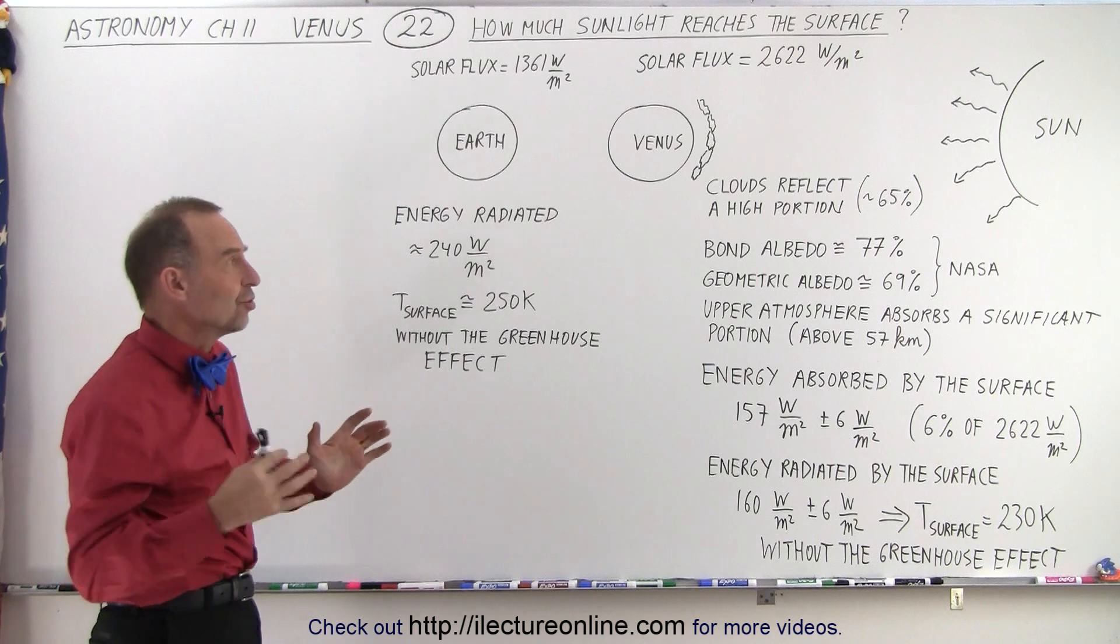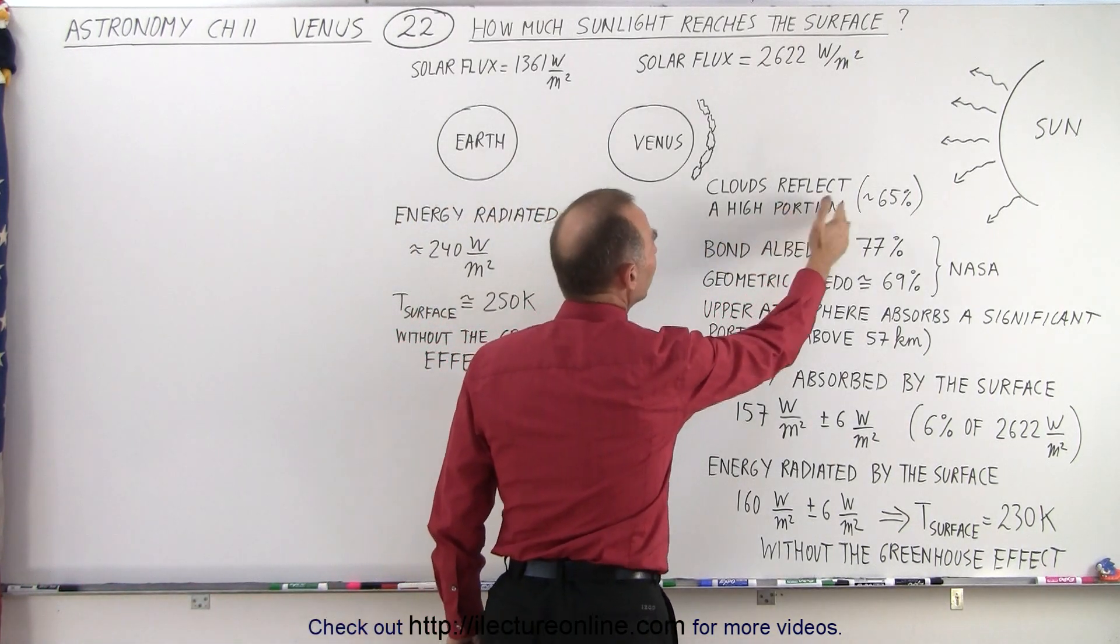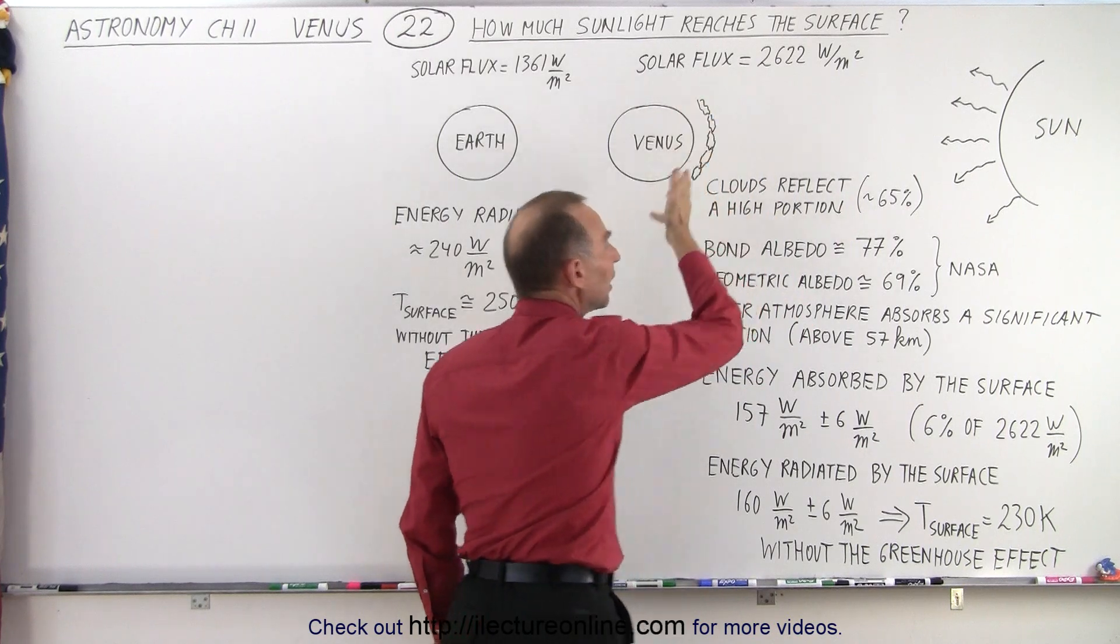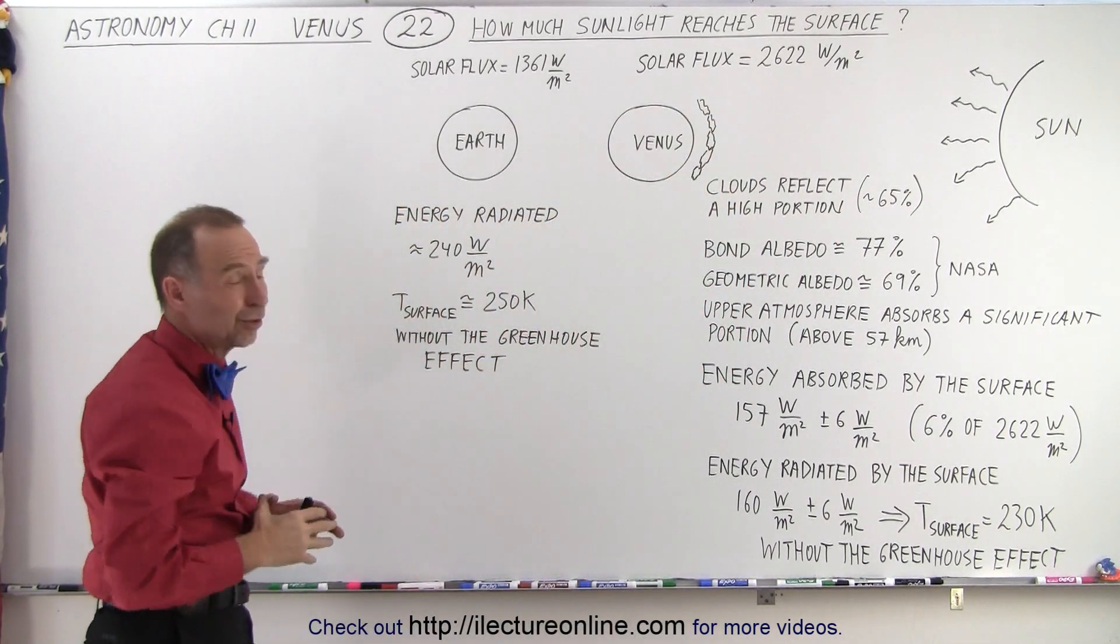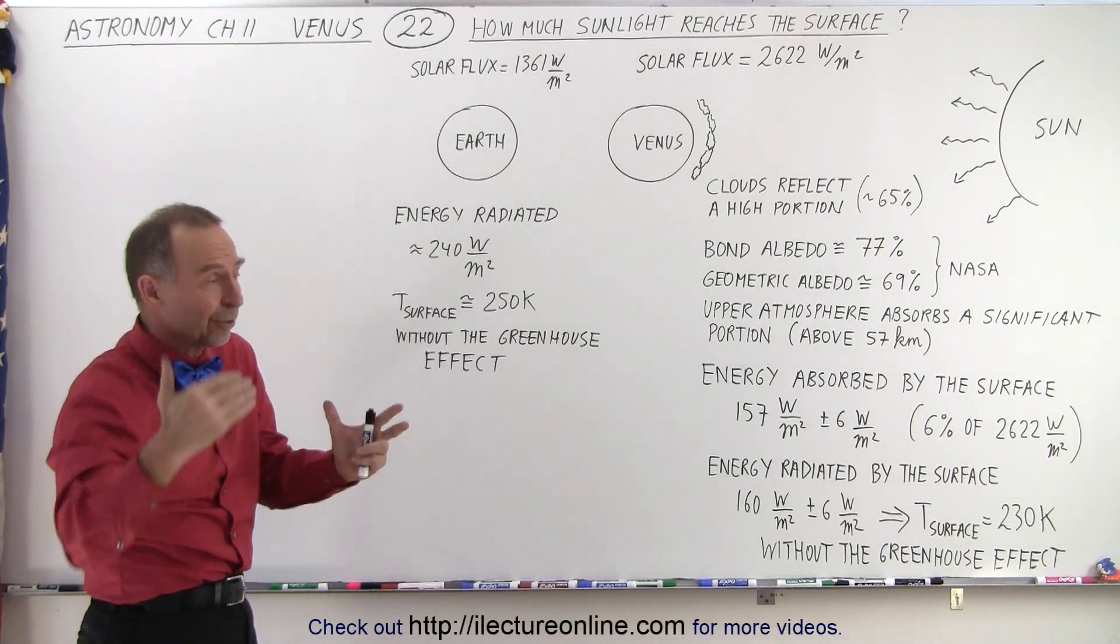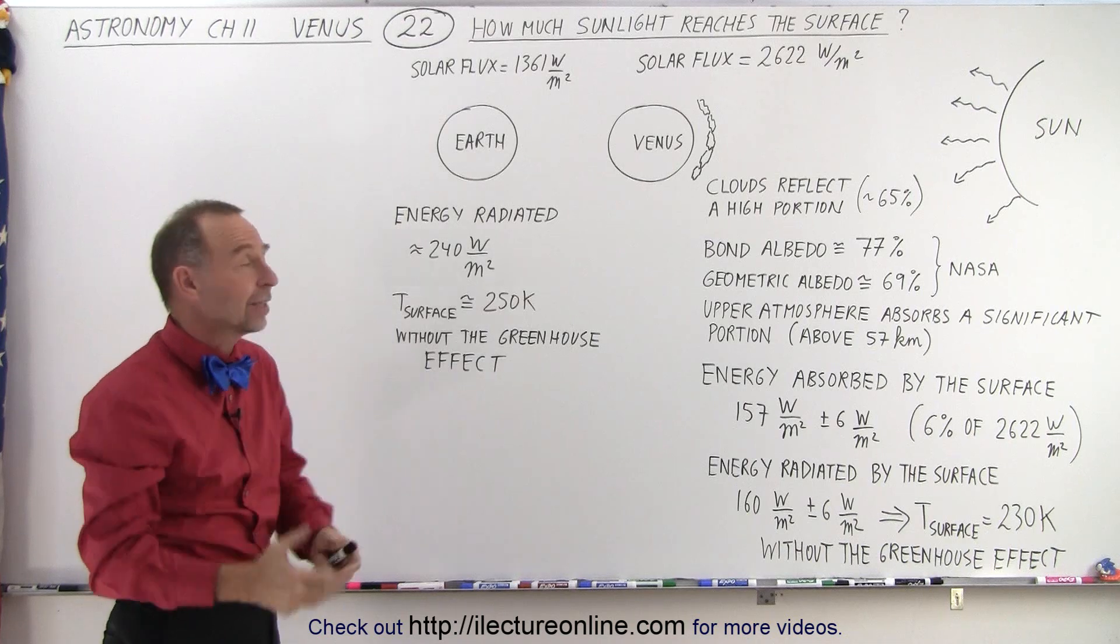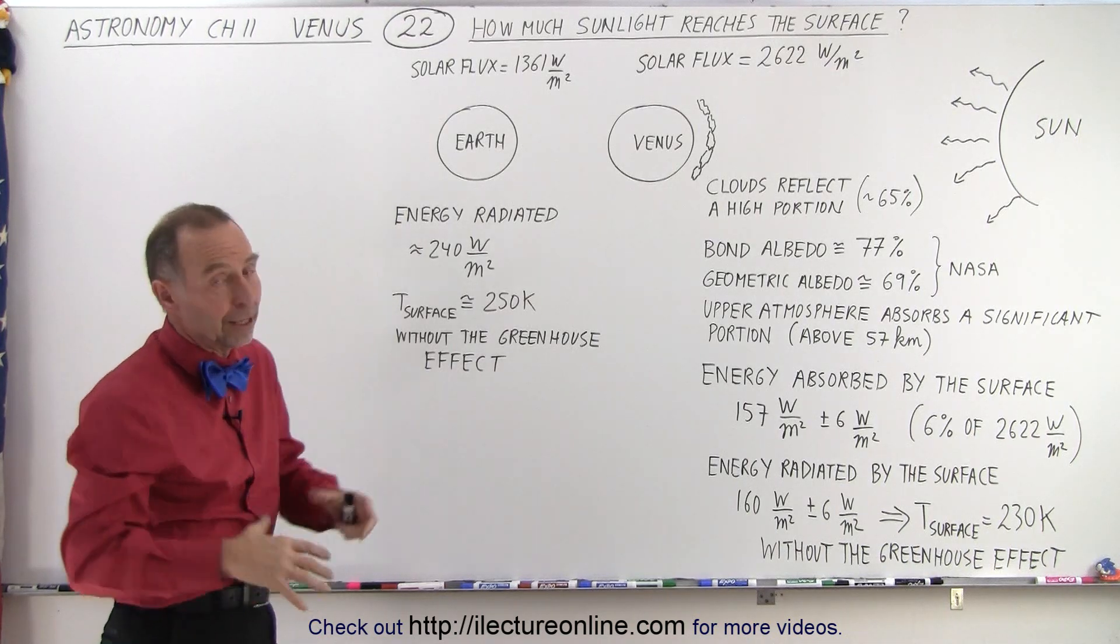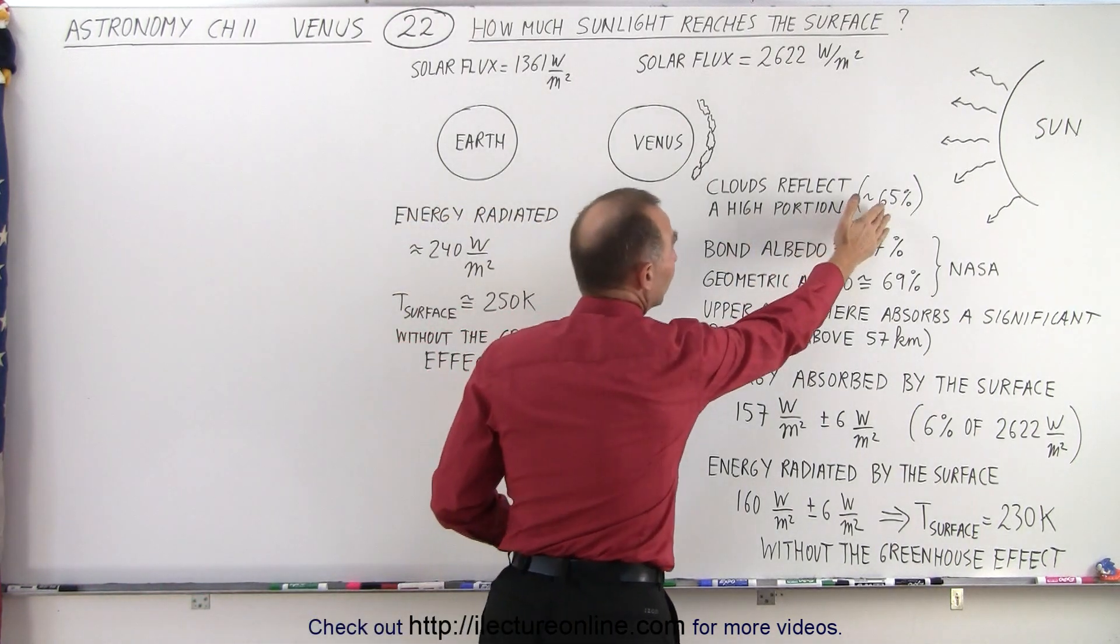So what happens to that energy? Well, much of it gets reflected back into space because of the thick cloud cover that forever shrouds the surface of Venus. The only way that we know what the surface looks like is by beaming radar beams through those clouds because visual light can simply not make it through there. And a big portion of the sunlight is indeed visible light. So it gets simply reflected back into space.